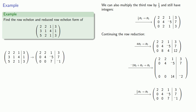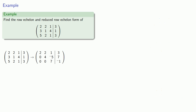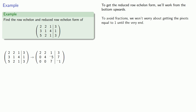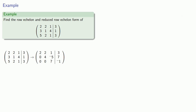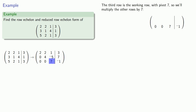And this produces our row echelon form of our augmented coefficient matrix. Now if we want to get the reduced row echelon form, we'll work from the bottom upwards. And to avoid fractions, we won't worry about getting the pivots equal to 1 until the very end of the problem. So now the third row will be the working row, which has pivot 7, so we'll multiply the other rows by 7.